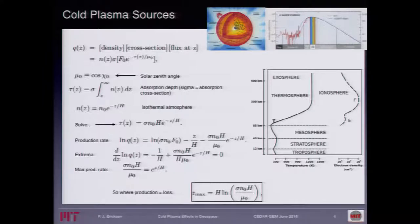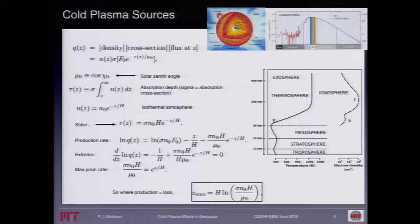If you're in a course, one of the things you might want to do is derive — given no dynamics or relatively stable conditions — what that profile of ionization would look like. Those of you who like derivations can follow along. In addition to Roger Varney's excellent tutorial earlier in the meeting, I recommend that you take these and just go through them. If you haven't done it, it's really not that complicated.